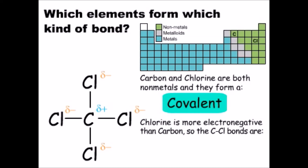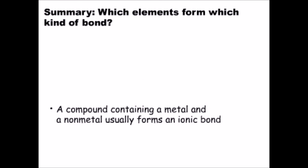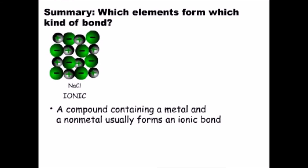Let's summarize what we've learned. A bond between a metal and a nonmetal is usually ionic. A bond between two nonmetals can be pure covalent or polar covalent, depending on the electronegativity of the atoms.